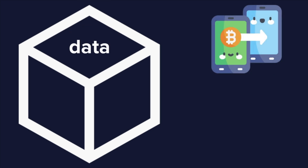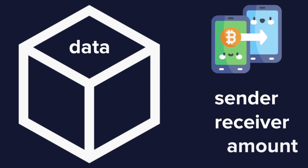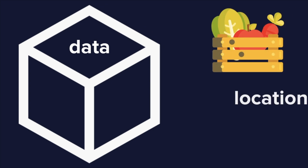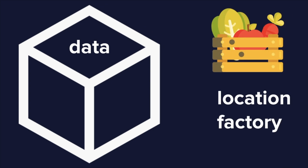Let's imagine that we have a block. Depending on the type of blockchain, this will contain specific data. For example, in cryptocurrency, this data would likely contain the sender, the receiver, and the amount of coin being sent. Another example could be food tracking — data of where the food was harvested or manufactured, and locations where the food was purchased. In the case of foodborne diseases, the source could be quickly detected and other distribution sources notified in minutes or hours rather than days or weeks.